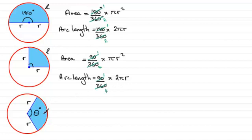So when it comes to a sector in general, then the area has got to be equal to θ degrees over 360 degrees. And it's going to be that fraction of the area of a complete circle, πr².